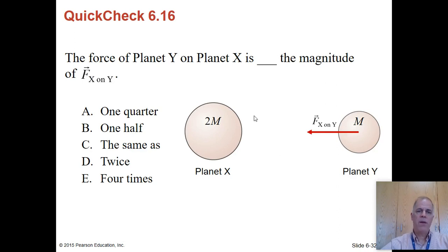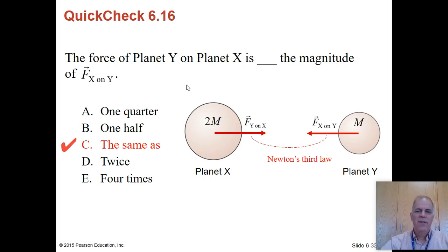Force on planet Y on planet X is what portion of the magnitude of X on Y? So Y pulls on X. How much force does X pull on Y? Hopefully you recognize this as a third law question. If one object is exerting a force on another object, the other object is exerting the same force on the original object. Always, always. You will see this question on your AP exam.